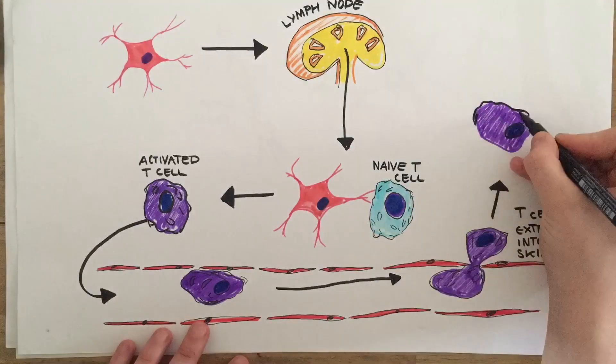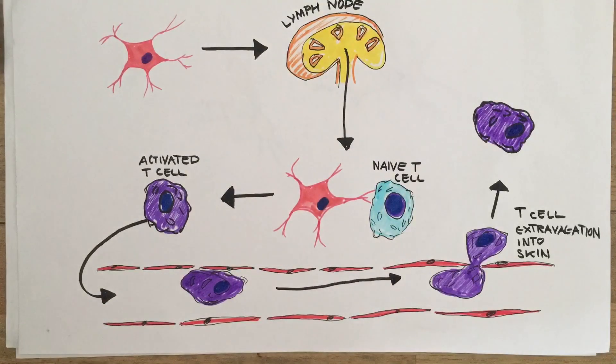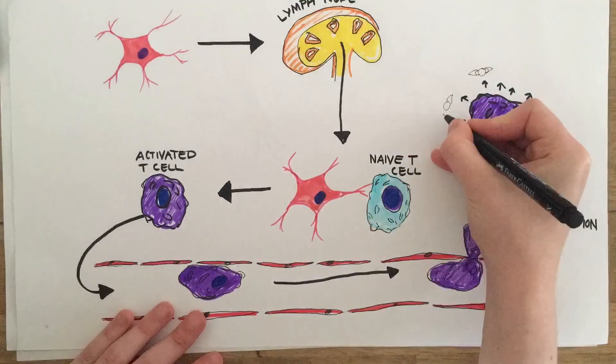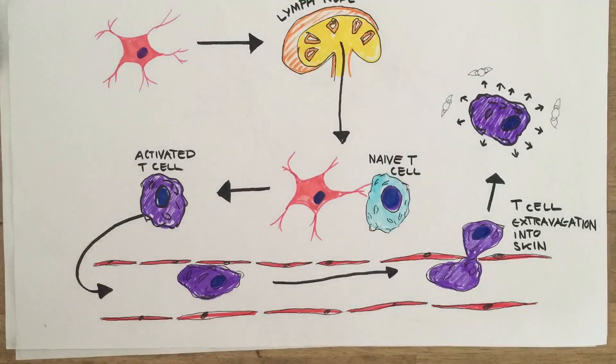The T cells extravasate into the skin. The memory T cells secrete cytokines TNF-alpha and interferon gamma, which causes keratinocytes to hyperproliferate.